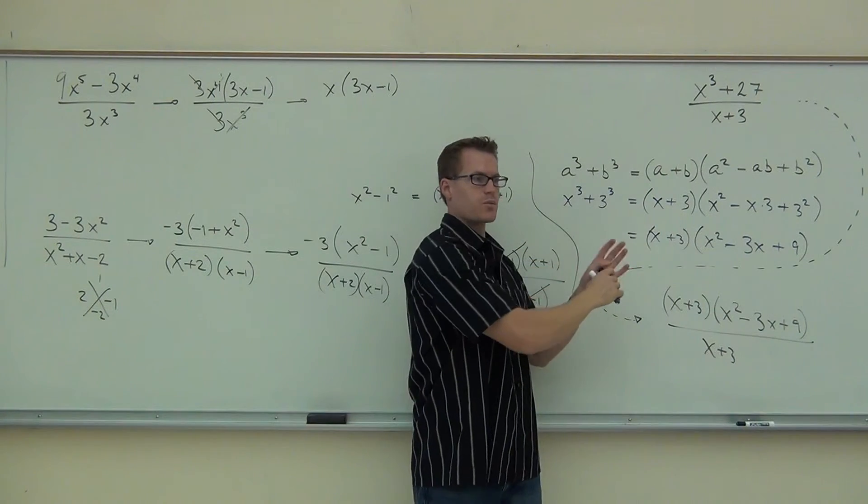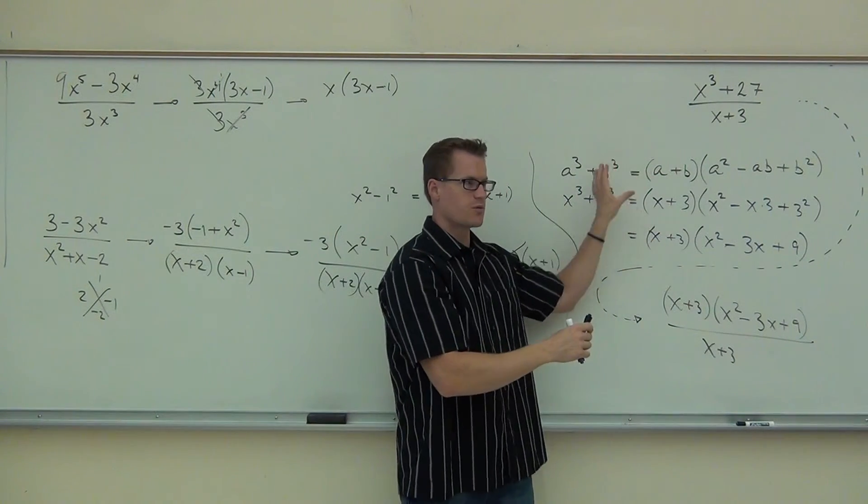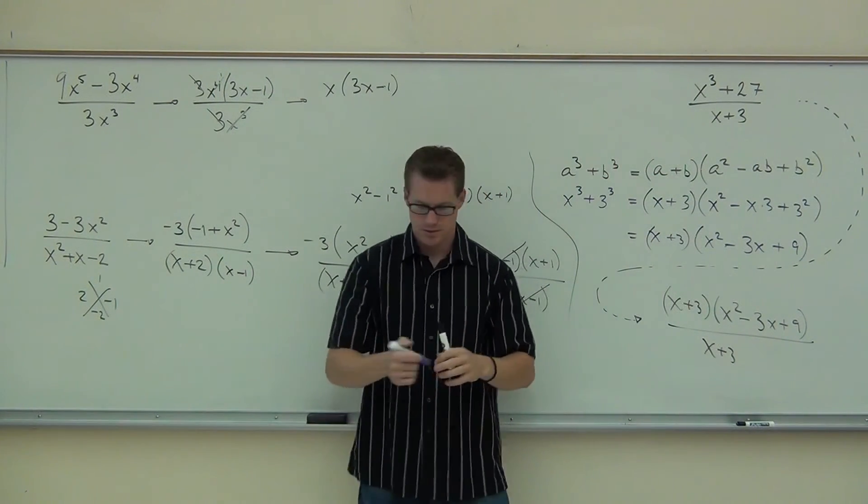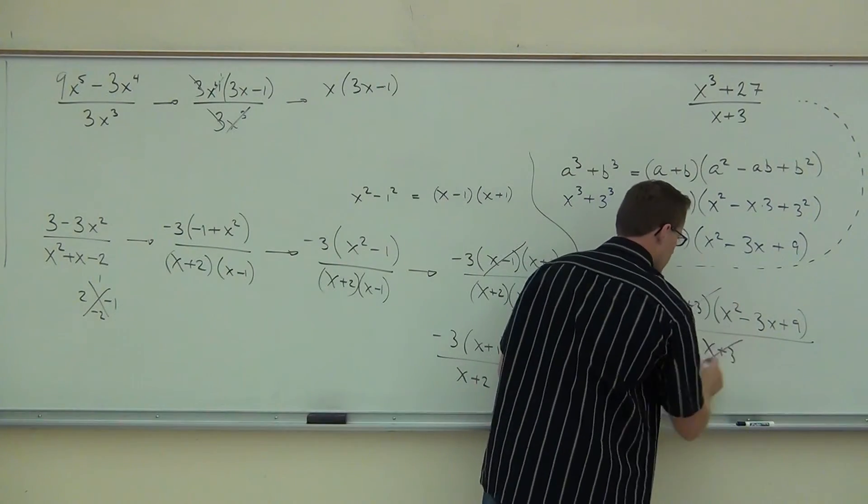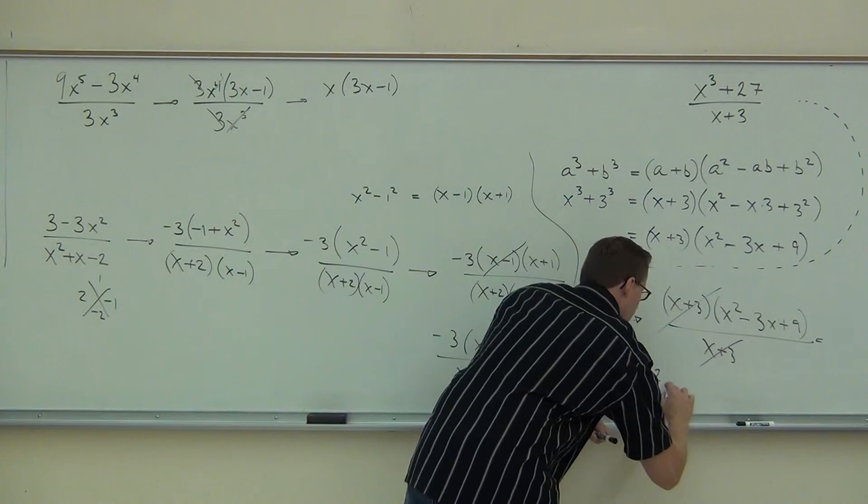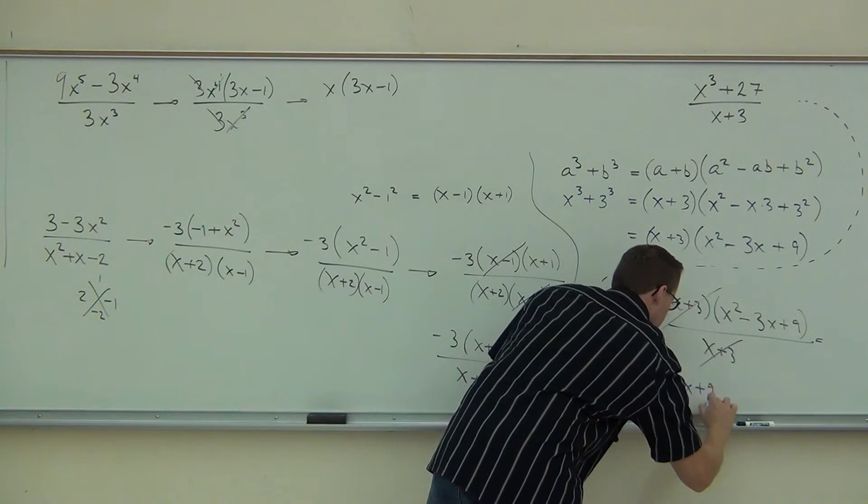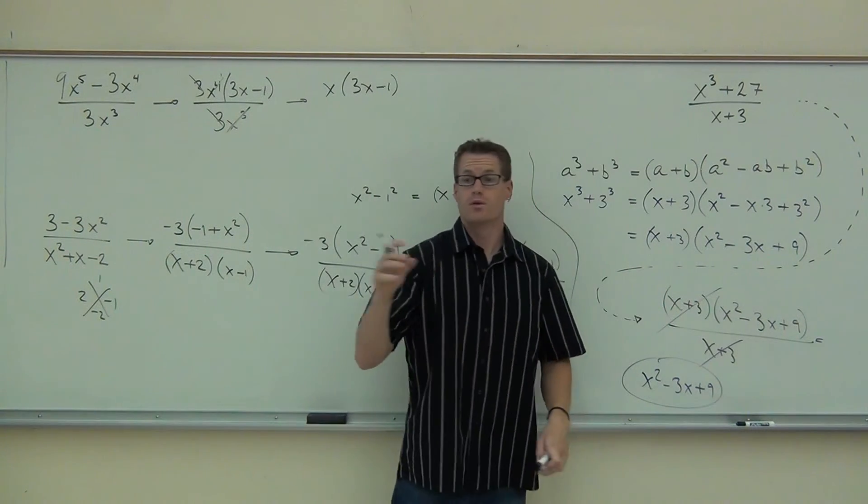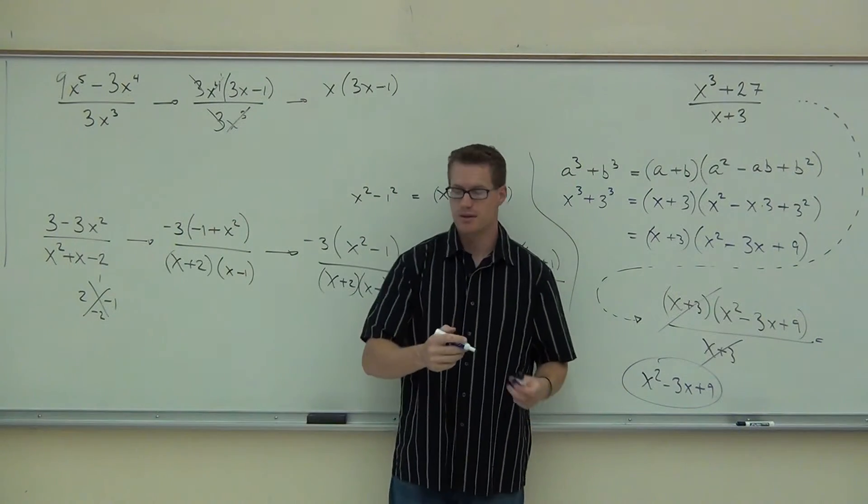We're going to have, instead of x³ + 27, this sum of cubes worked for us. We're going to have (x + 3)(x² - 3x + 9) all over what's the denominator still? We couldn't simplify that. Does anything simplify? x + 3. That's great. We've got two complete factors on the numerator and denominator. We can simplify out the x + 3. Are you with me on this one? Are you sure? Fancy math, but it's just a formula. I mean it works.